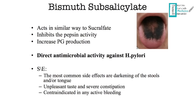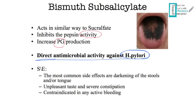Bismuth subsalicylate acts similarly to sucralfate. It also inhibits pepsin activity, increases prostaglandin production, which increases angiogenesis and cell turnover. Importantly, it has direct antimicrobial activity against H. pylori, which is why it is used in quadruple therapy. The key side effect is darkening of the stool and tongue — the sign of hairy tongue. It is also contraindicated in patients with active bleeding.